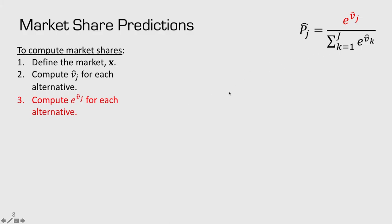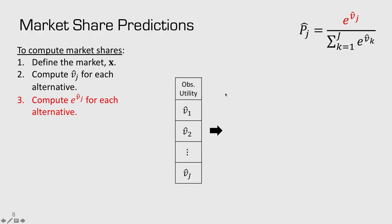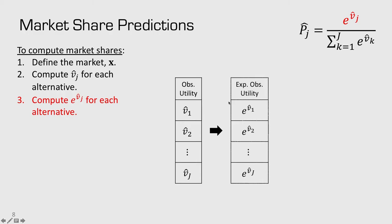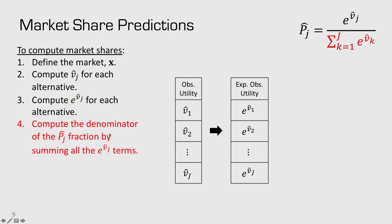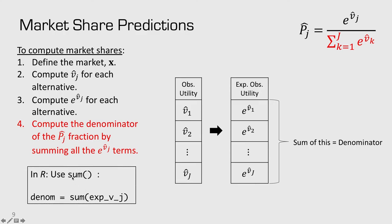Next we exponentiate our observed utility: we raise e to the power of the observed utility. In R, you use the exp function to do this. Then we compute the denominator of the equation, which is just the summation of all of our e-to-the-observed-utility values — the sum of the whole vector we just computed. In R, use the sum function and save it as a new object called denom.